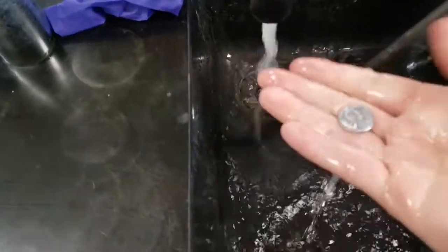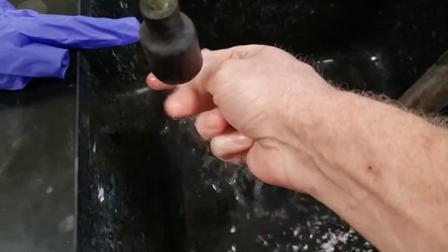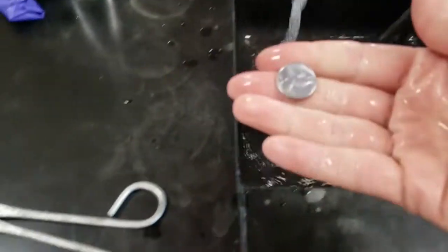I just rinse it off. I'm not trying to scrub it. I'm trying to get any of the residual base off of it, trying to get any of the pieces of zinc off of it, so it just looks like a shiny silver penny. And then I want to pat it dry if it's still wet.